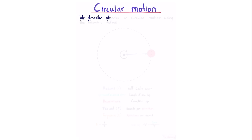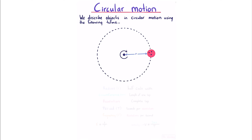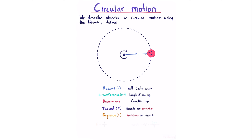Circular motion. We describe objects in circular motion using the following terms: radius r (half the circle's width), circumference 2πr (length of one lap), a revolution (one complete lap), period T (seconds per revolution), and frequency (revolutions per second). Frequency and period are reciprocals: frequency equals 1 over period. The velocity of the object is distance over time, where distance for one revolution is 2πr and time is the period T.